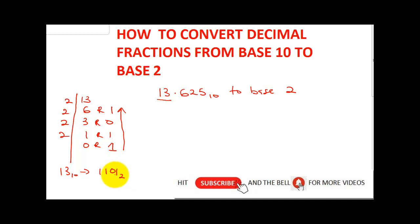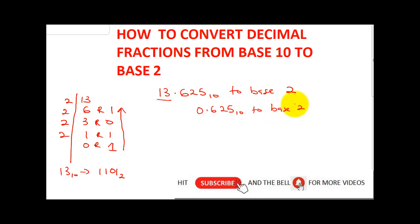Now where we have a job to do is converting 0.625 base 10 to base 2. In order to do this, all you need to do is multiply 0.625 by 2.